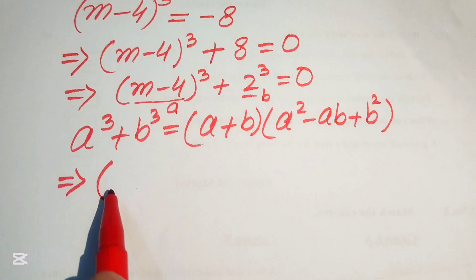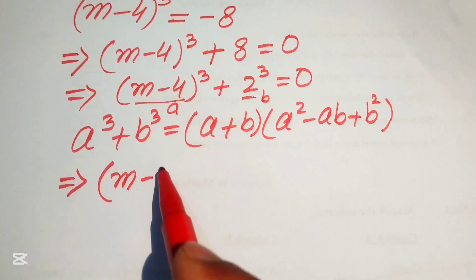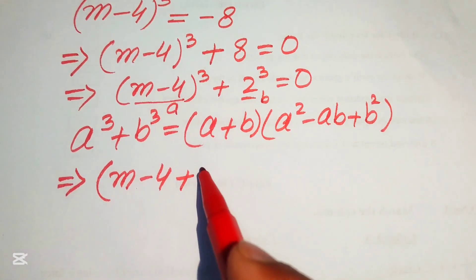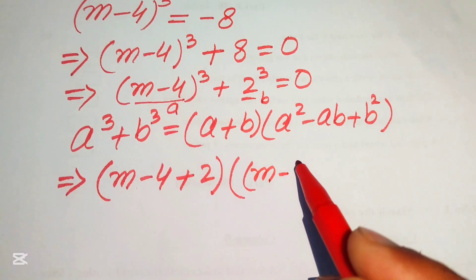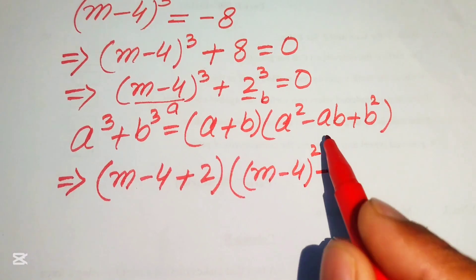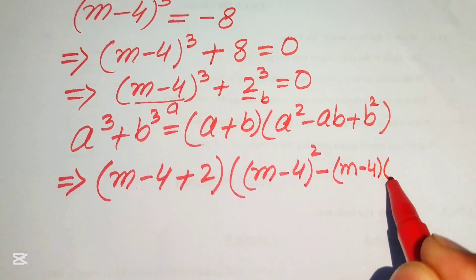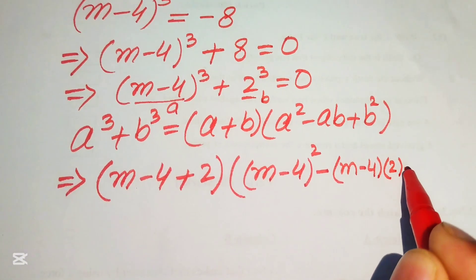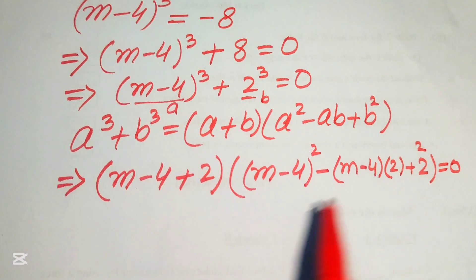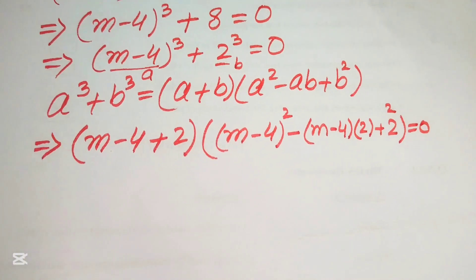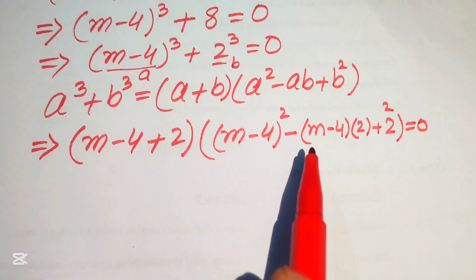Substituting a and b into the right-hand side of the formula, the first factor is (a + b) = (M - 4 + 2). The second factor is (a² - ab + b²) = (M - 4)² - (M - 4)(2) + 2², and this whole expression equals 0.